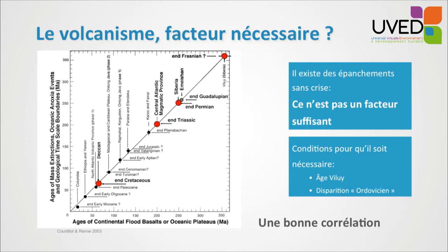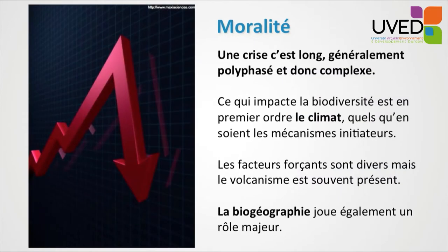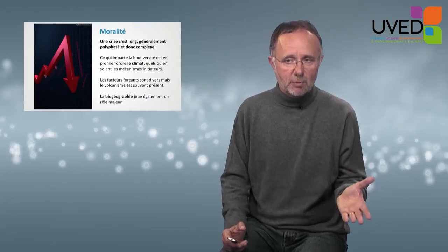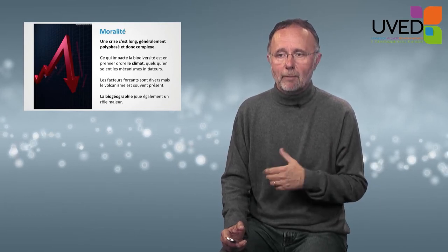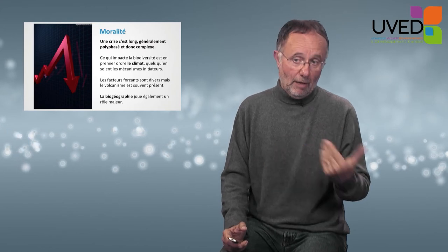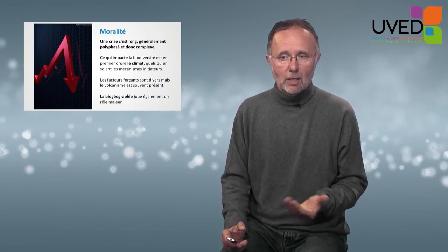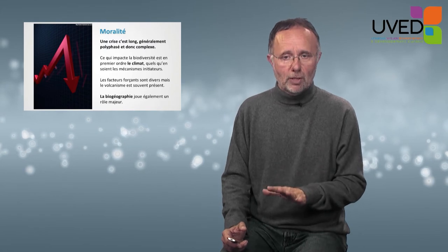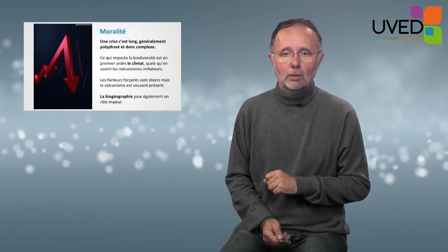In conclusion, crises are long, generally made of several phases, and are complex events — they're all different. Everything that impacts biodiversity is the climate, first and foremost, with triggering events such as meteorites or volcanic activity. But whichever the initiating mechanism, it is the climate that will impact the biosphere. Forcing factors are diverse and volcanic activity is very often present. Finally, biogeography also plays a major role — the distribution of continents plays a major role in crises.